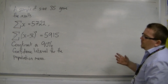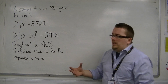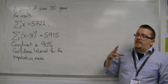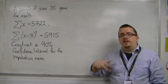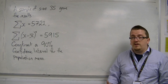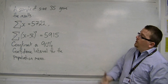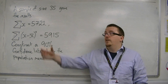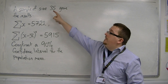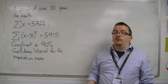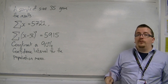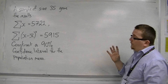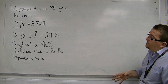Because we don't know that the population is normally distributed, our sample size needs to be large enough — which it is — in order for us to use the central limit theorem. So that's all well and good.